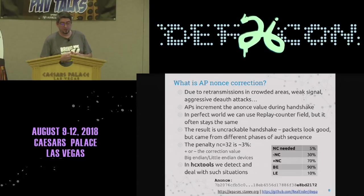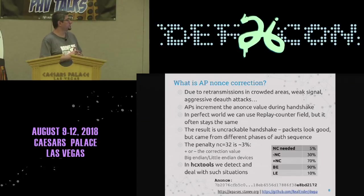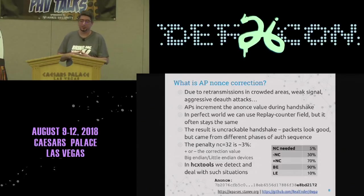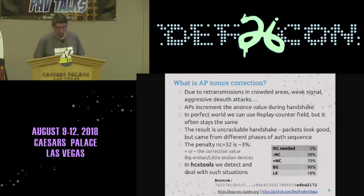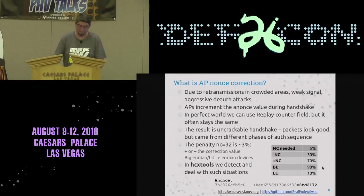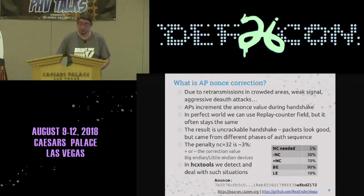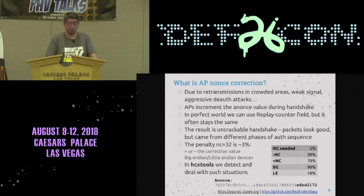Nonce correction can be negative or positive and can be implemented mathematically for both big-endian and little-endian. A lot of routers are MIPS-based or big-endian, and it's normal to see around 90% of them in that category. HCX tools can deal with this situation and reduce the issue significantly.